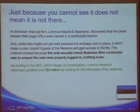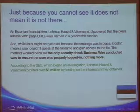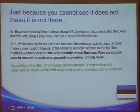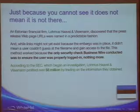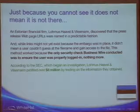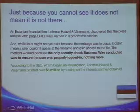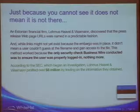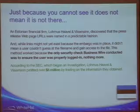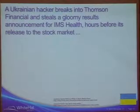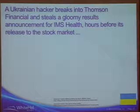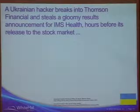Bad guys figured this out. An Estonian financial firm discovered press releases were named with predictable URLs, started crawling the site, grabbed embargoed press releases, and started trading on the information. Before the SEC found out, they had profited around $8 million. A related case: a Ukrainian hacker broke into Thompson Financial, stole a gloomy earnings announcement on IMS Health just hours before it was set to release to the market — illustrating the same principle of accessing non-public financial information through web vulnerabilities.